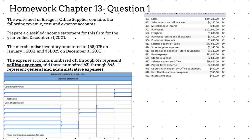The merchandise inventory amounted to $58,075 on January 1, 2021 and $51,025 on December 31, 2021. The expense accounts numbered 611 through 617 represent selling expenses, and those numbered 631 through 646 represent general and administrative expenses.